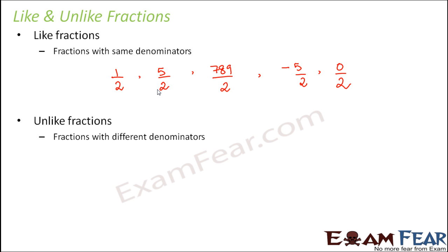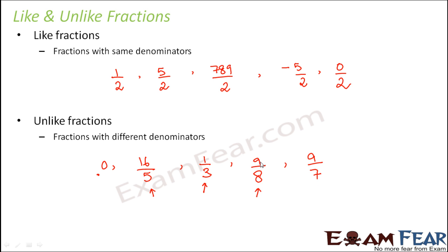Unlike fractions are fractions with different denominators. For example, 16/5, 1/3, and 9/8 are all unlike fractions. Note that when comparing like or unlike fractions, we only compare their denominators — it is independent of the numerators. Even if the numerators are the same, like 9/8 and 9/7, they are unlike fractions because the denominators are different.